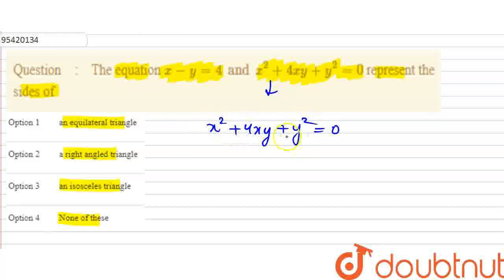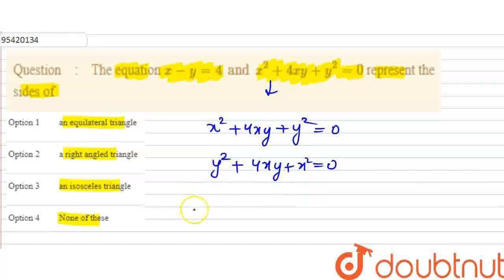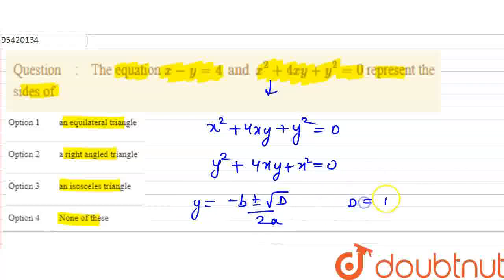So this is our quadratic equation. I will write it as: y squared plus 4xy plus x squared equals 0. The roots of this quadratic equation are found using the formula: y equals minus b plus or minus root of discriminant D, divided by 2a. Here D equals b squared minus 4ac.